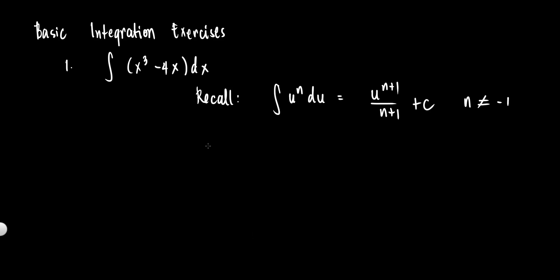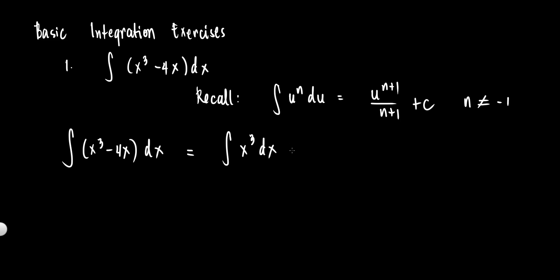The powers here are 3 and 1, so they are not equal to negative 1 — we can use the power formula. For the solution, the integral of x cubed minus 4x dx. We can distribute the dx, so this will be equal to the integral of x cubed dx minus the integral of 4x dx.